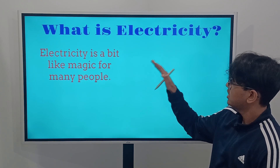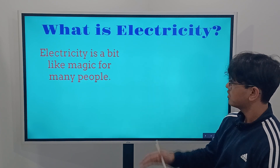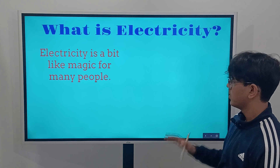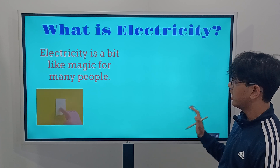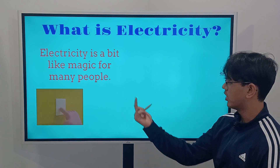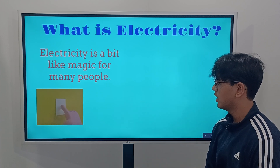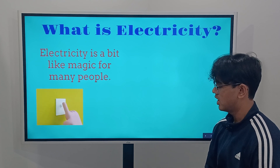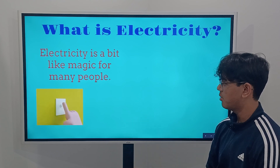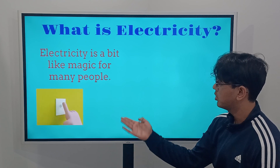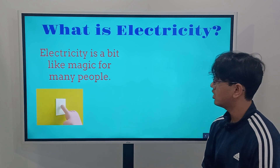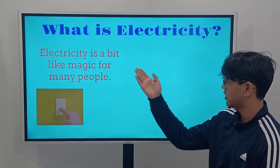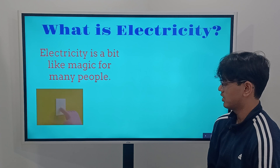Electricity is a bit like magic for many people, because as soon as you turn on your light switch, the light automatically appears. So how does this happen? A lot of people don't know this, and that's why they think electricity may be magic.